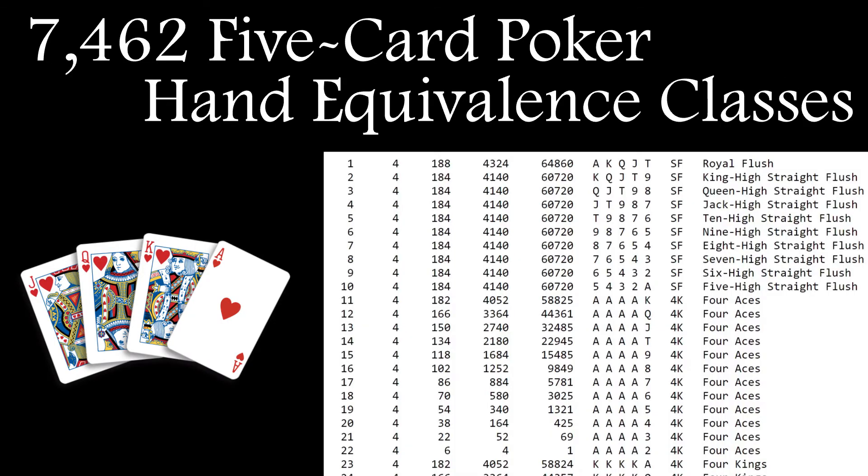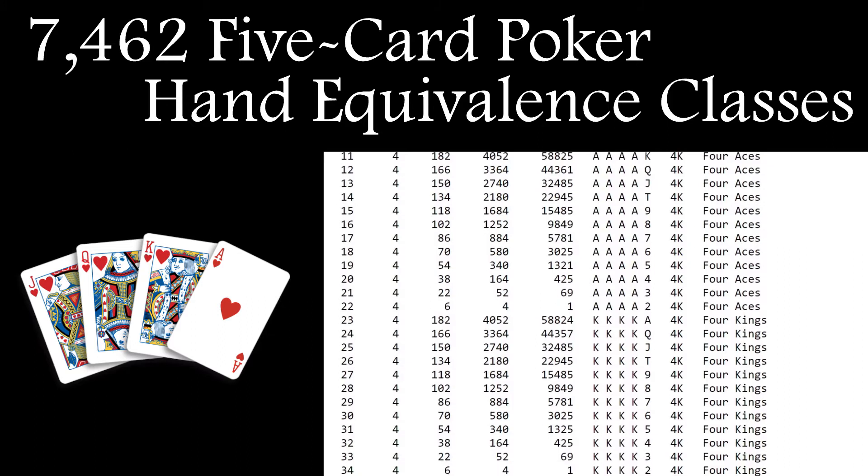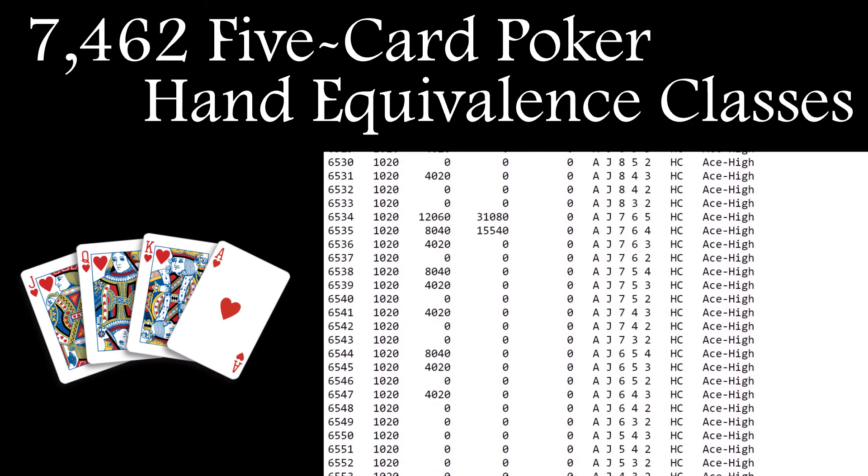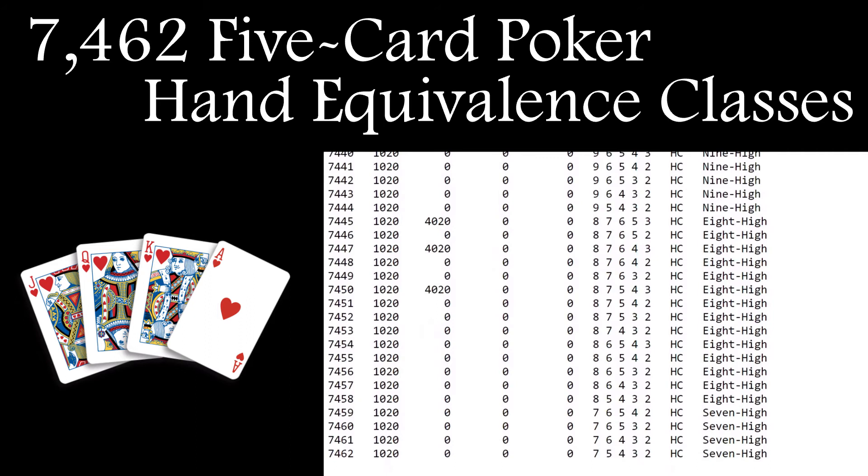You can download a table with all of them listed out from the best hand rank of a royal flush at number one all the way down to an unsuited high card at the bottom of the list. You'll need this list to continue so I'll add a link in the description.